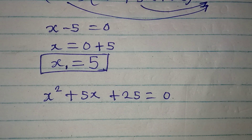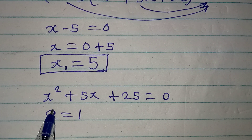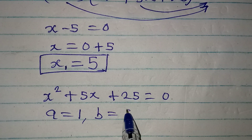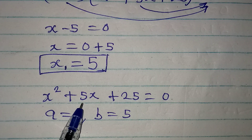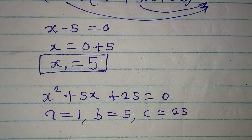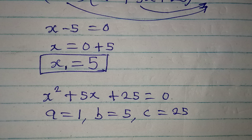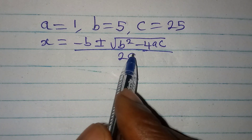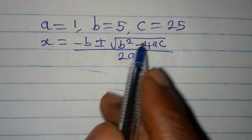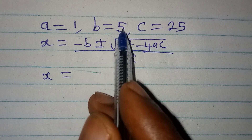Once you equate a quadratic expression to zero it becomes a quadratic equation, and we can solve this using the formula method. For the formula, our a is 1 — that is the coefficient of x squared — then our b is plus 5, the coefficient of x, and c is equal to 25. So this is the quadratic general formula.